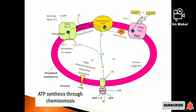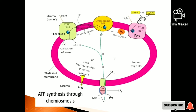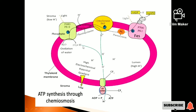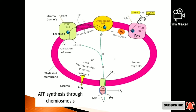From the Cytochrome B&F complex, only electrons are passed on, while the H+ ions are actively pumped into the lumen. The H+ ions accumulate in the lumen — this is an active process of pumping protons into the lumen. The Cytochrome B&F complex then passes electrons to the mobile carrier Plastocyanin.